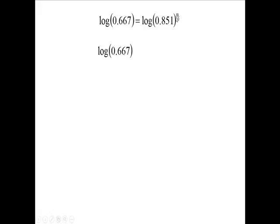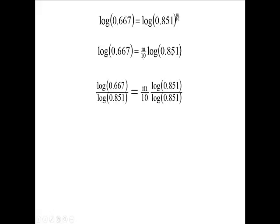The exponent M/10 goes in front of the log. Then divide both sides by log(0.851), which gives you M/10 = log(0.667)/log(0.851).